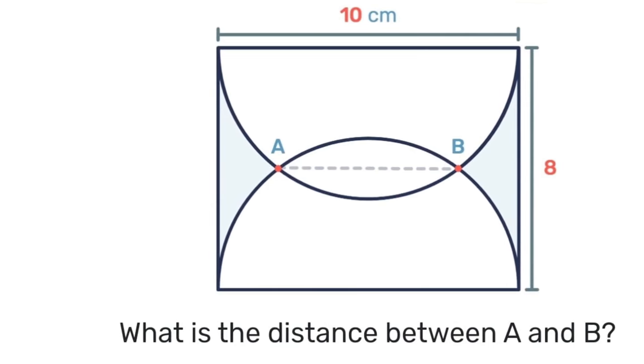So to solve this problem, we're first going to realize that the diameter of that circle is 10 centimeters which means that the radius is 5.